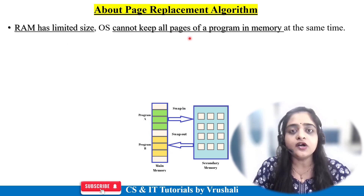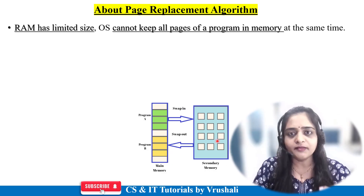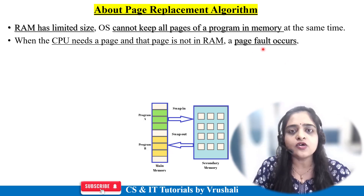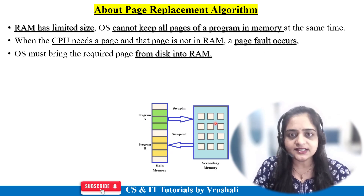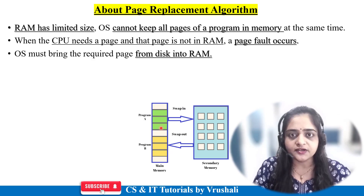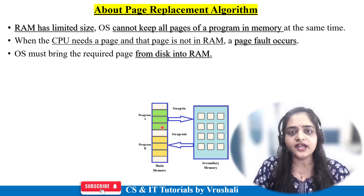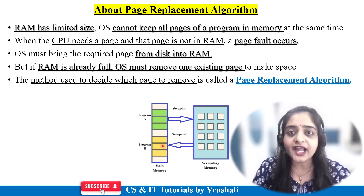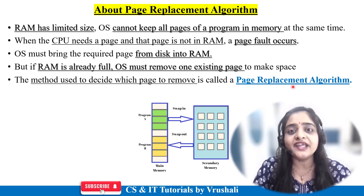The operating system cannot keep all the pages of a particular process in main memory all the time. They keep all the pages in secondary memory. Suppose the CPU demands page number 3 and page number 3 is not present in main memory for execution — this is called a page fault or page miss. At that time, the operating system uses a page replacement algorithm.